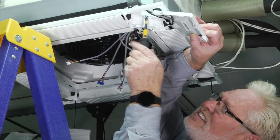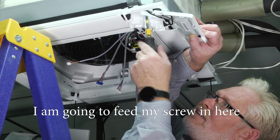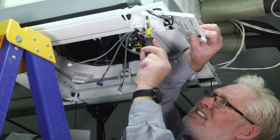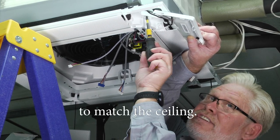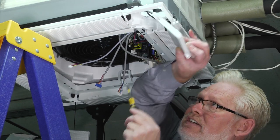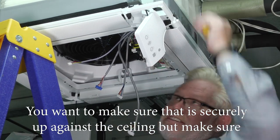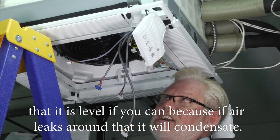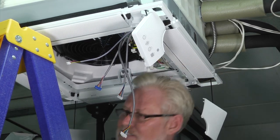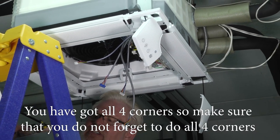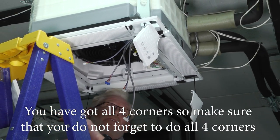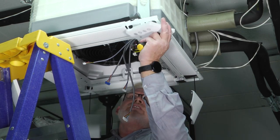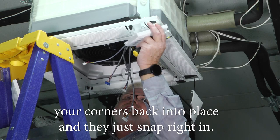I'm going to feed my screw in here and that will adjust this panel up or down to match the ceiling. You want to make sure that's securely up against the ceiling, but make sure it's level as you can, because if air leaks around that it will condensate. You got all four corners, so make sure you don't forget to do all four corners. Once you're done, you're going to reattach your corners back into place and they just snap right in.